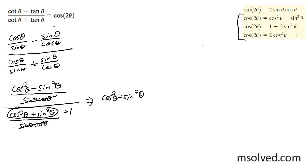Which, if you look up here, is equal to what we're looking for. So that's equal to cosine of the double angle — cosine of 2 theta. That's it.